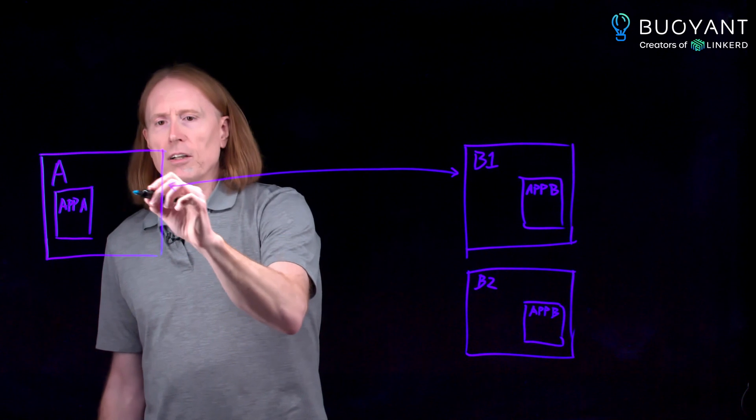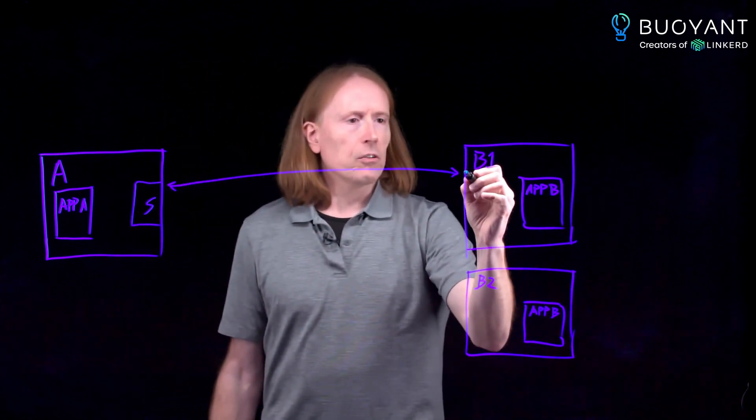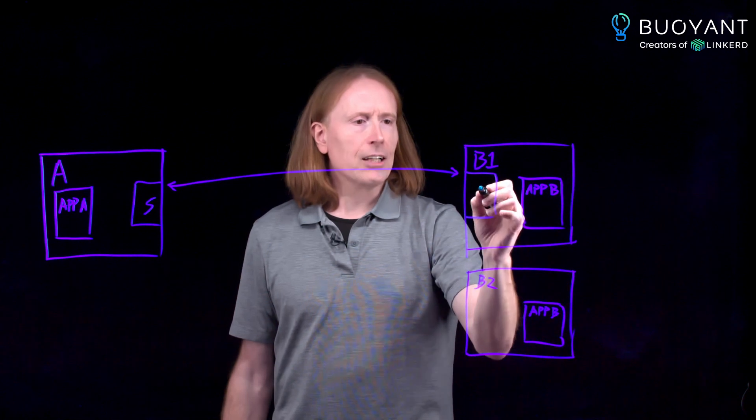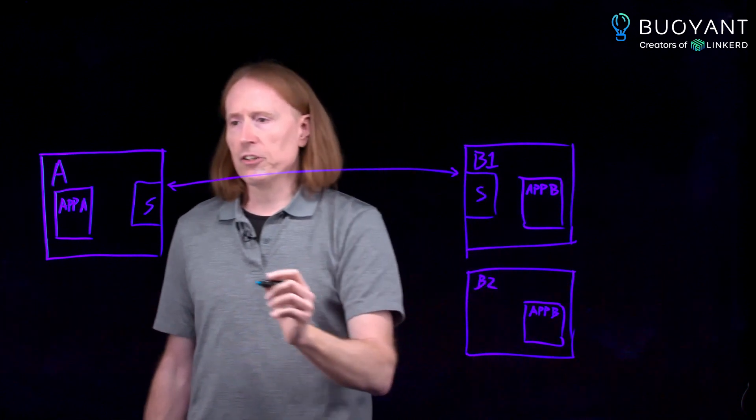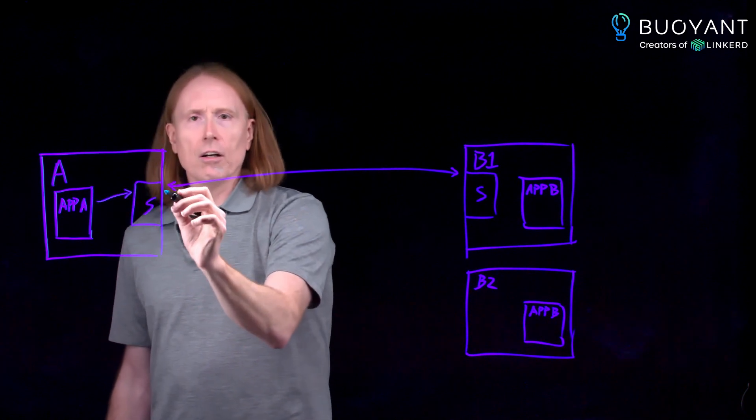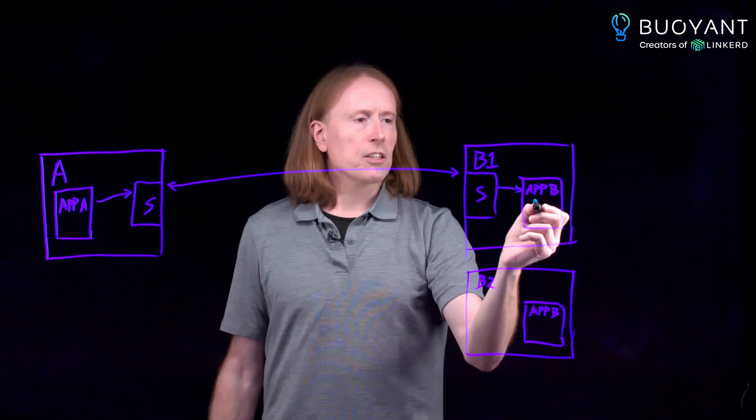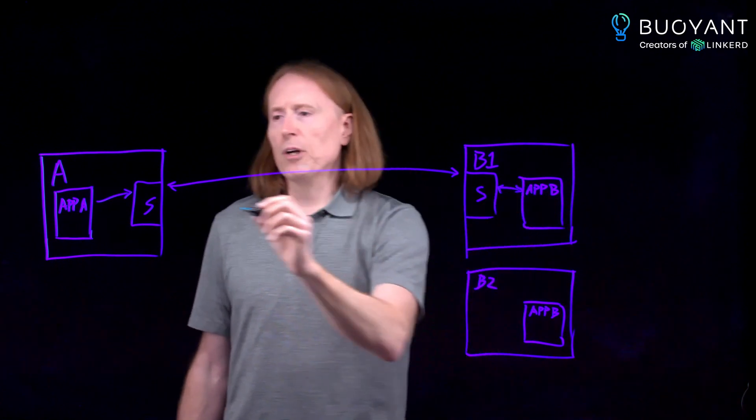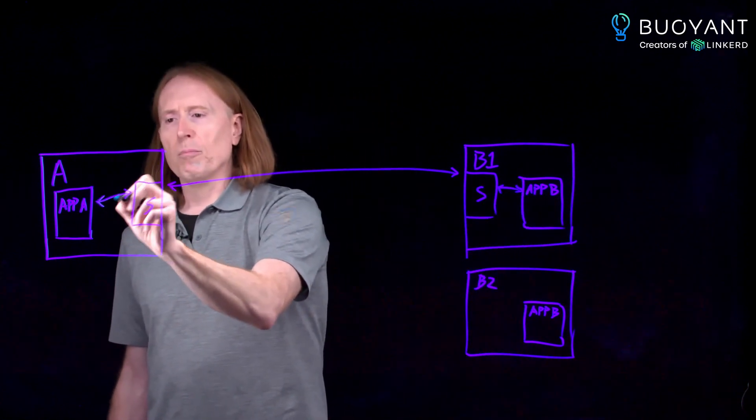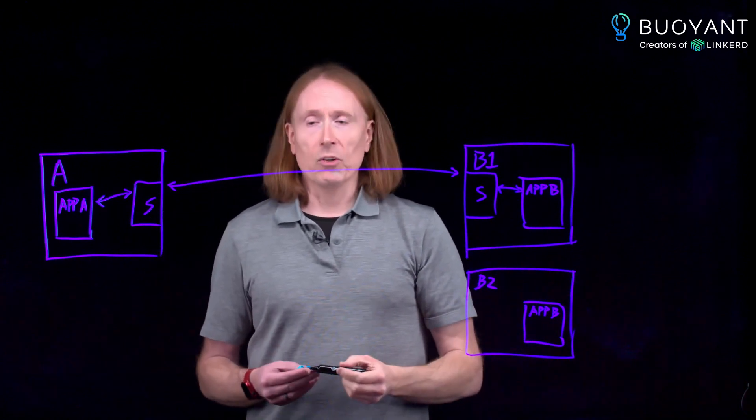We also have our sidecars with the service mesh. And you'll notice that the sidecar is actually the thing that's managing communications here. So our application container talks to the sidecar, which then sends a connection over to this other sidecar, which then talks to the application, and then the responses come back through the same path.